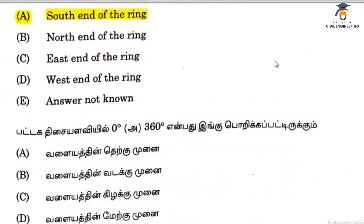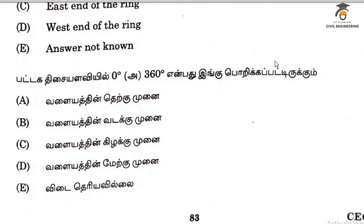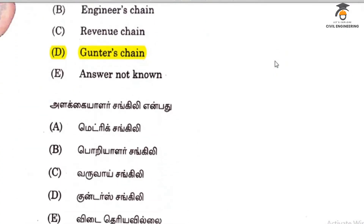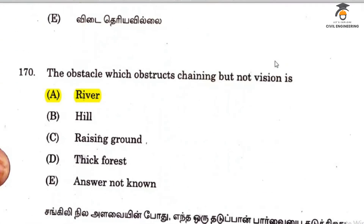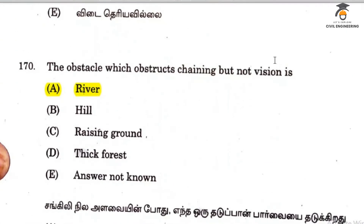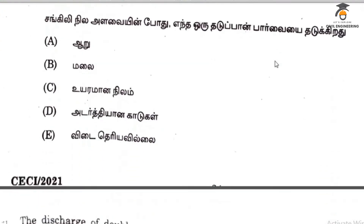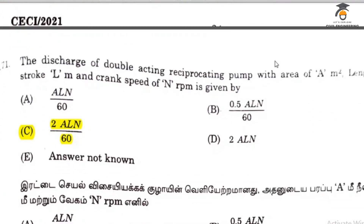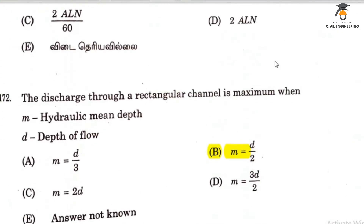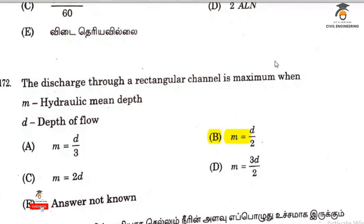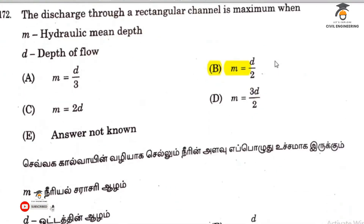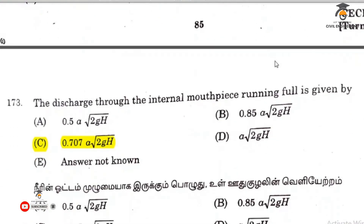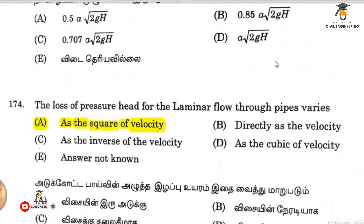Question 167 relates to the topography of an area. Question 168 is the south end of the ring. The survey chain synonym is a Gunter's chain. An obstacle which obstructs chaining but not ranging is a river. Question 171 answer is 2EI by 60. Question 172: same equals D by 2.